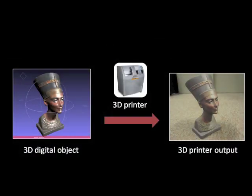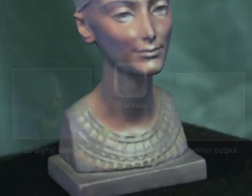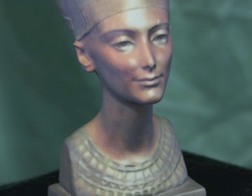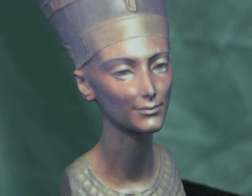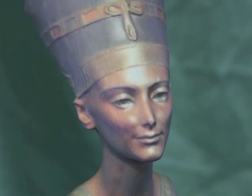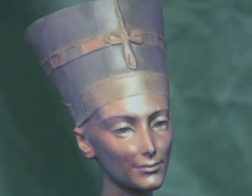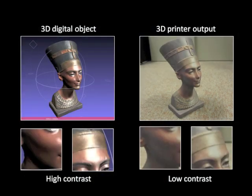The current 3D printing technology makes it possible to form a textured 3D physical object from a virtual model. The shape of the virtual model is reconstructed with precision; however, the printed 3D object surface has a low contrast.